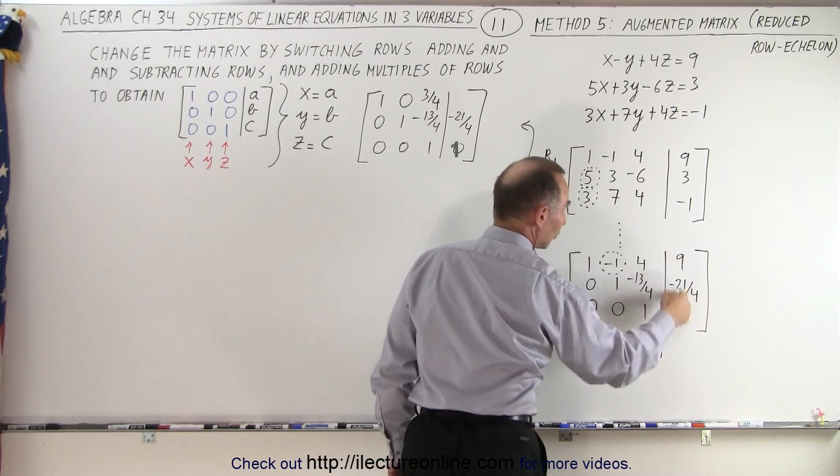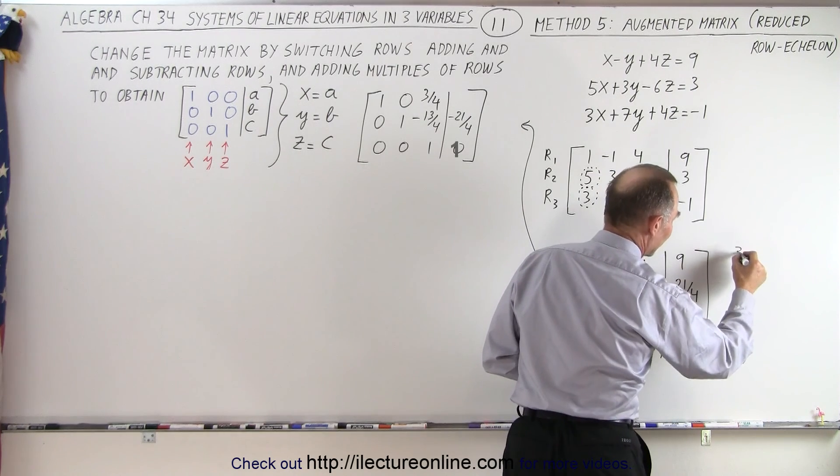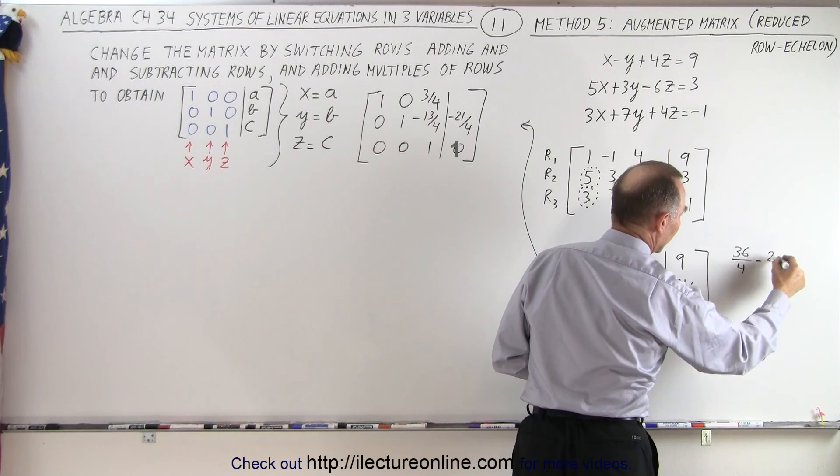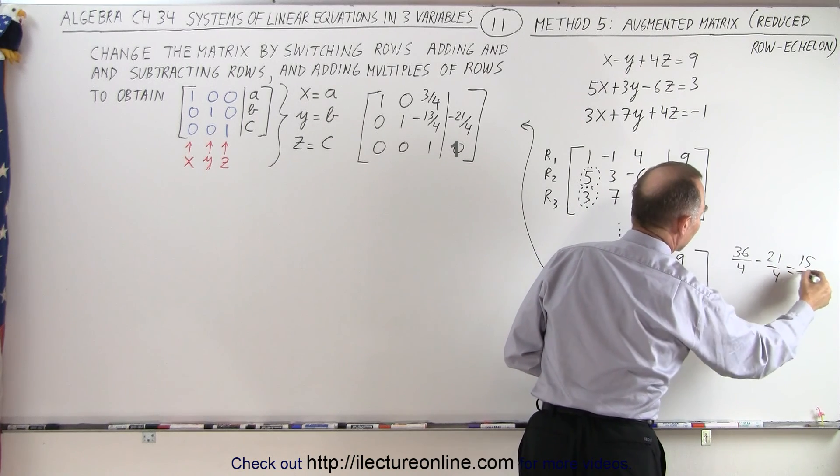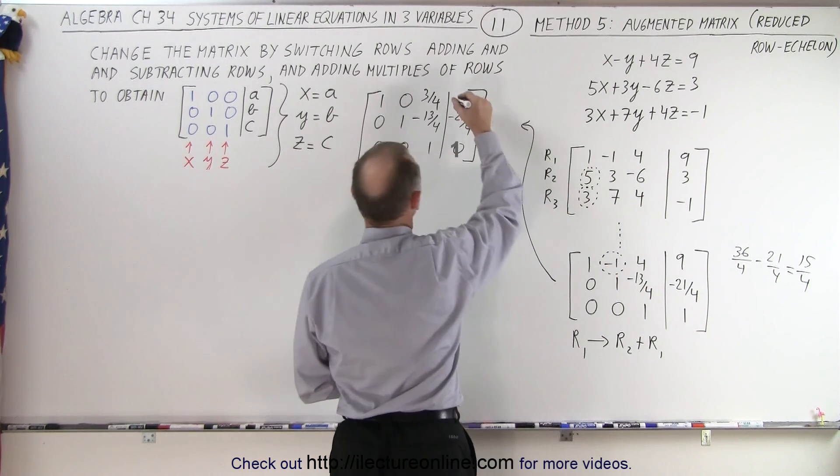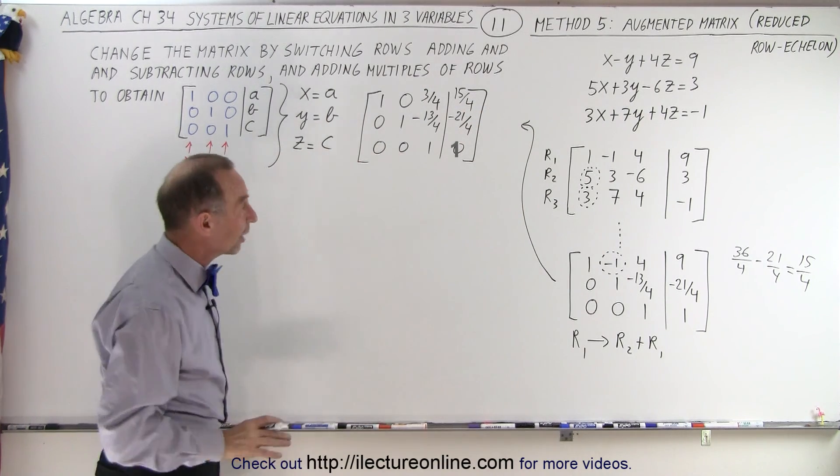And here, when we add these two together, nine is the same as 36 over four. So let me show that nine would be the same as 36 over four, and then add a negative 21 over four. So 36 minus 21, that's 15 over four. So that means that this is going to become 15 divided by four. Okay, we're almost there.